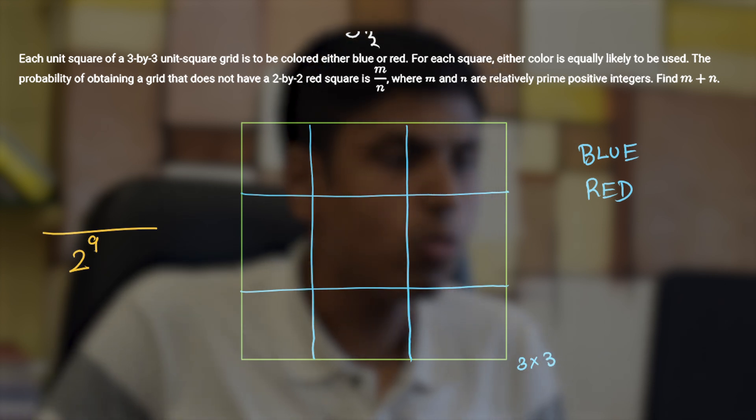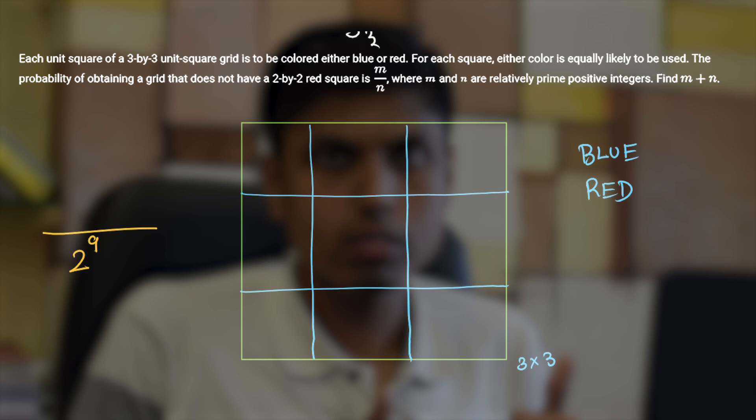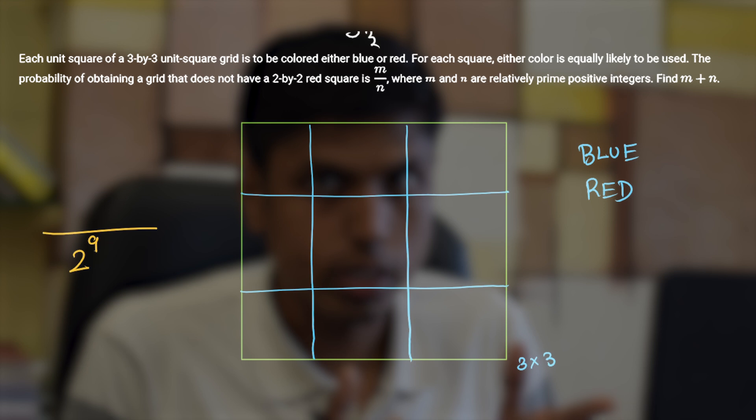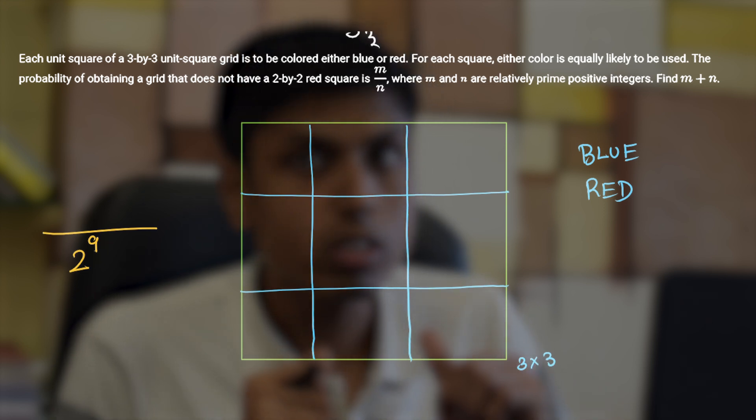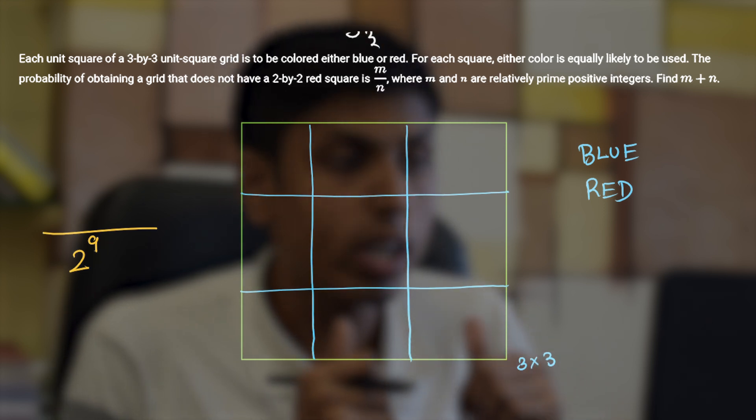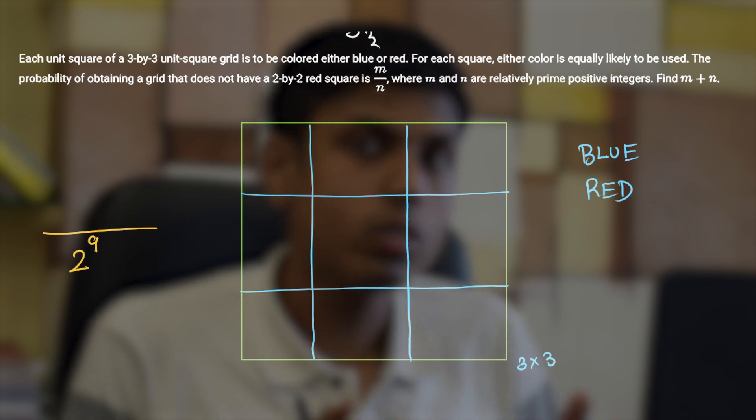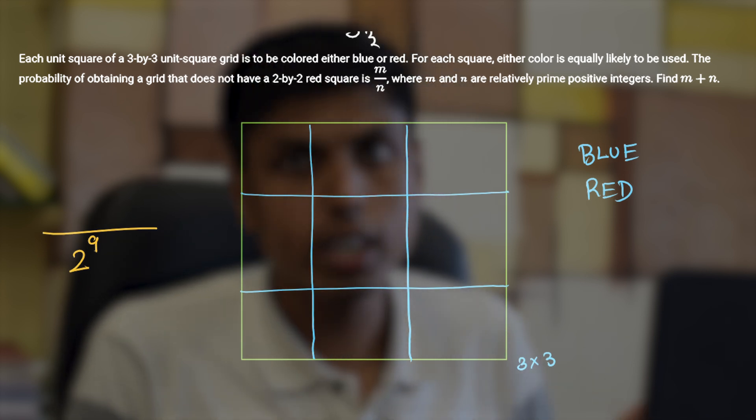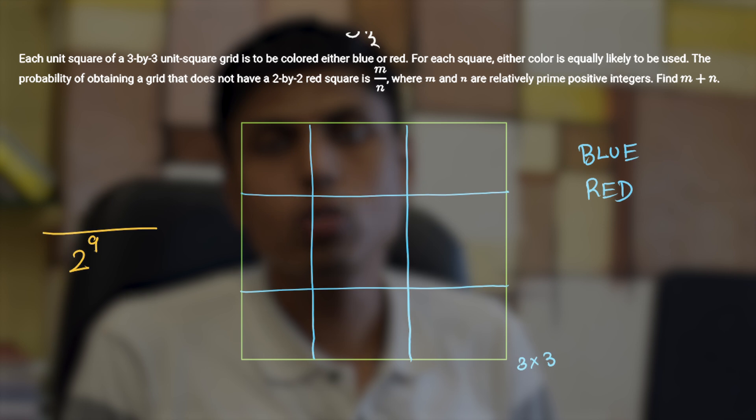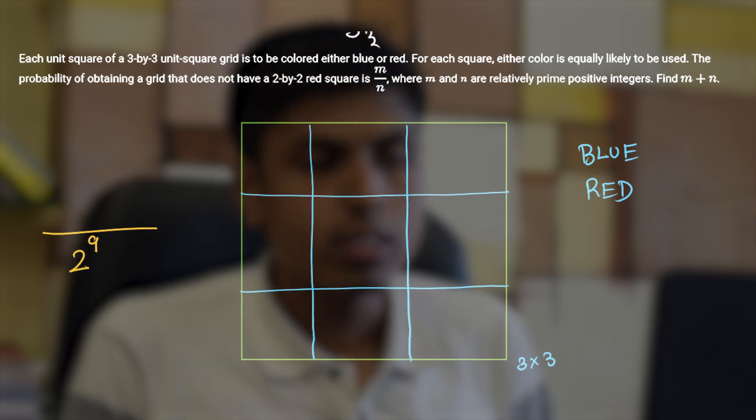And let's count the complement of this given case. The given case is asking you to count for non-existence of 2 by 2 grid but actually let's count the probability for existence of 2 by 2 grid and thereby when you consider 1 minus the probability you will get the actual answer.